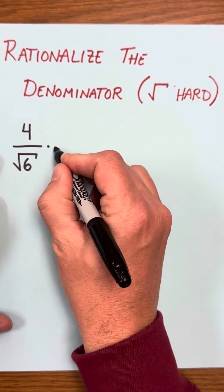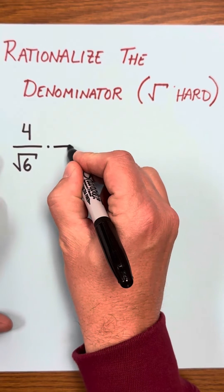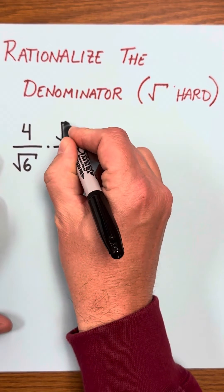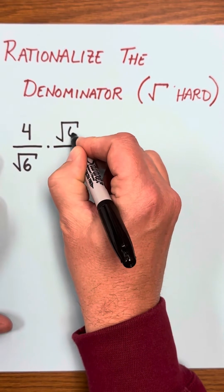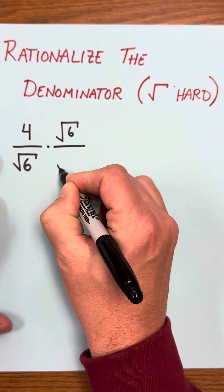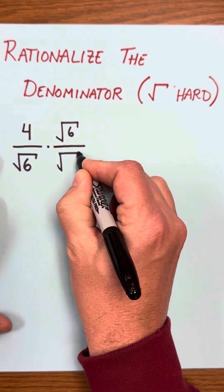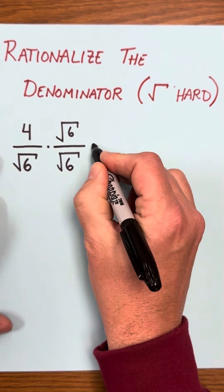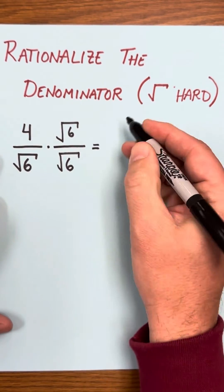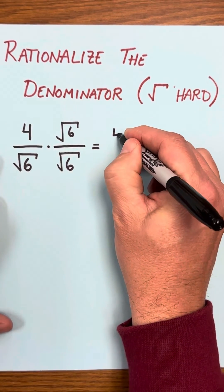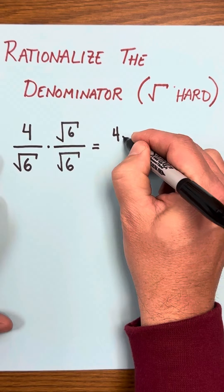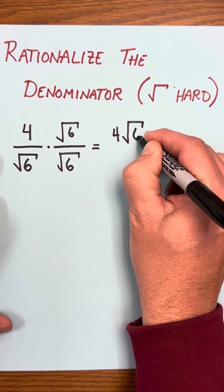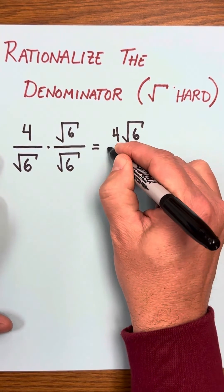We're going to start this by multiplying by the fraction square root of 6 over square root of 6. The numerator becomes simply 4 square root of 6.